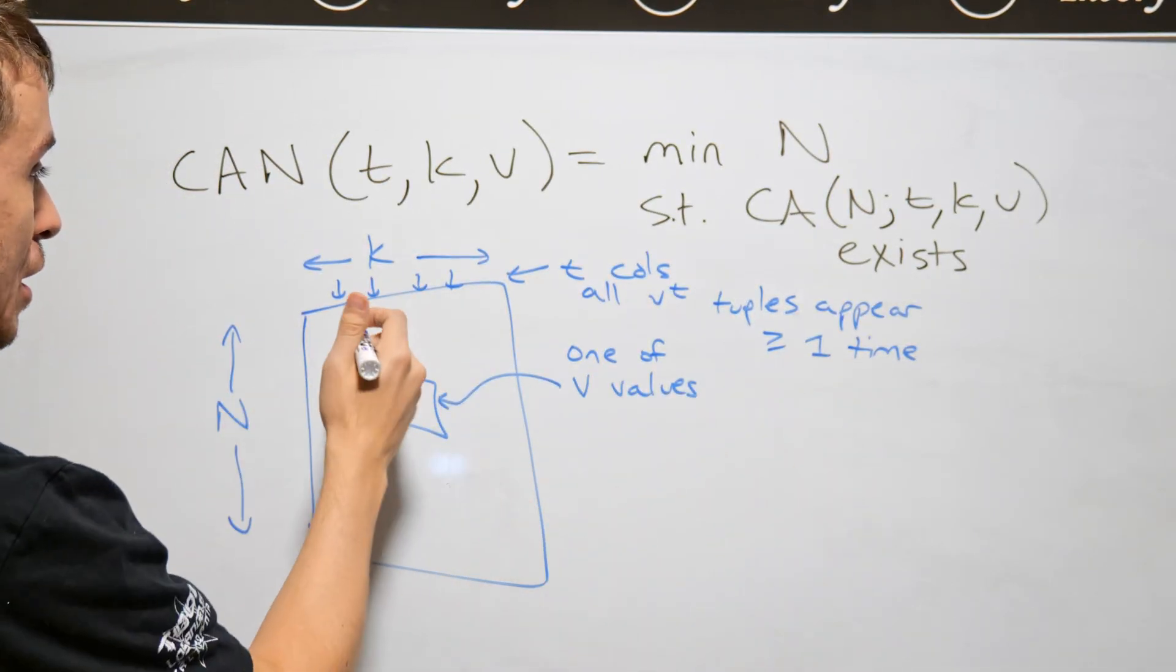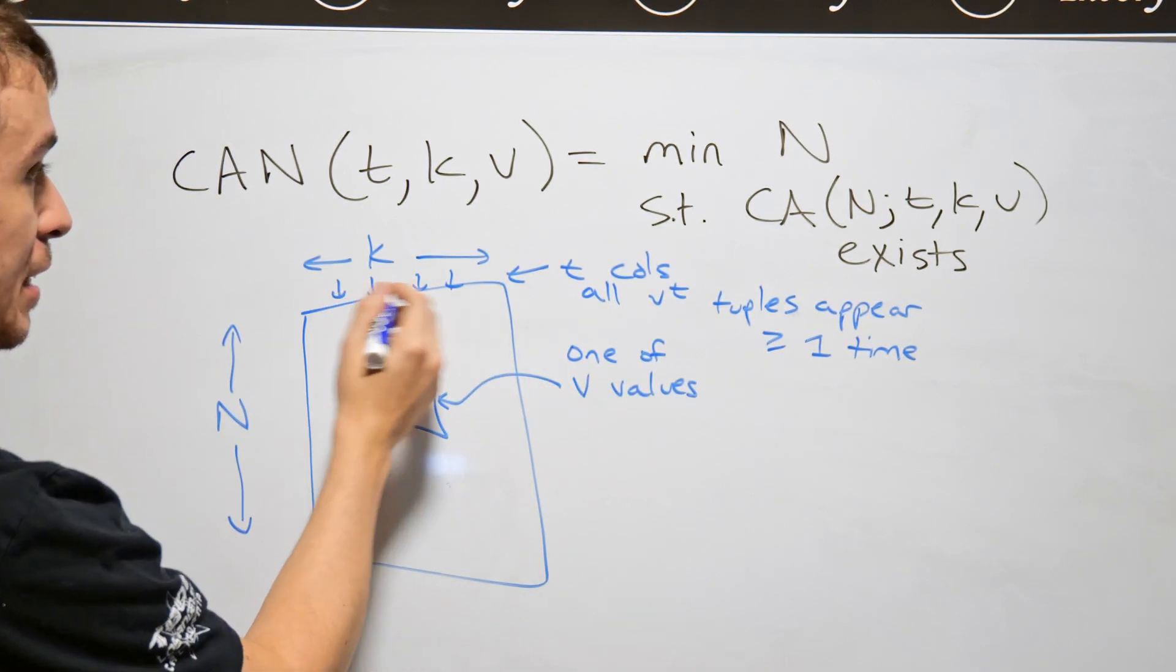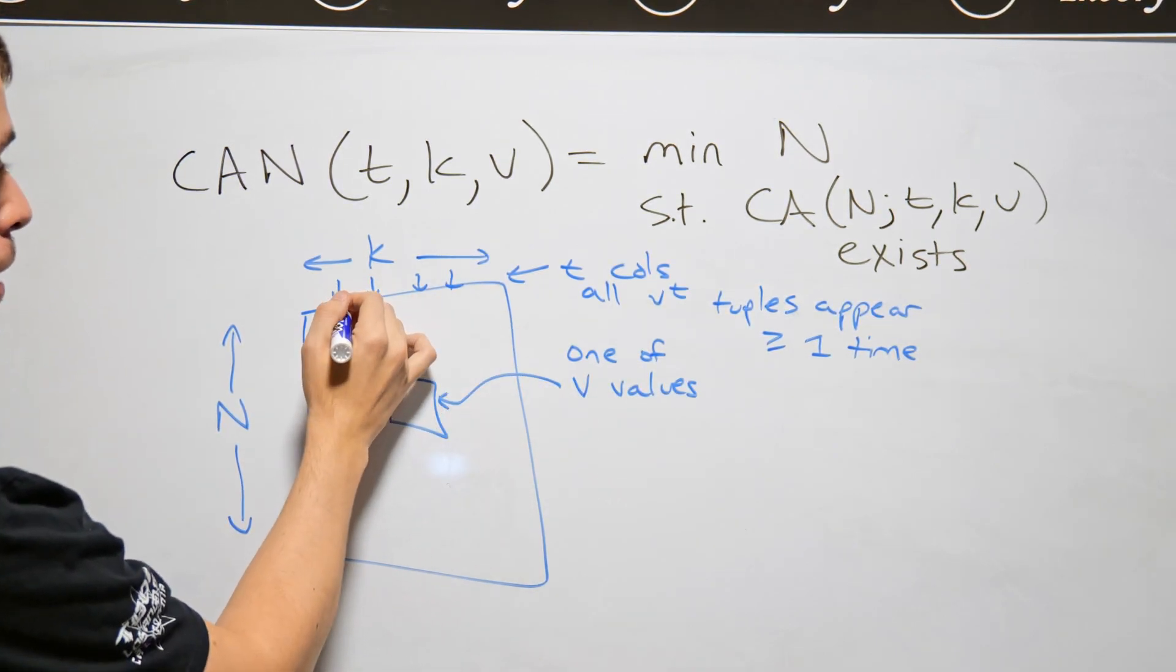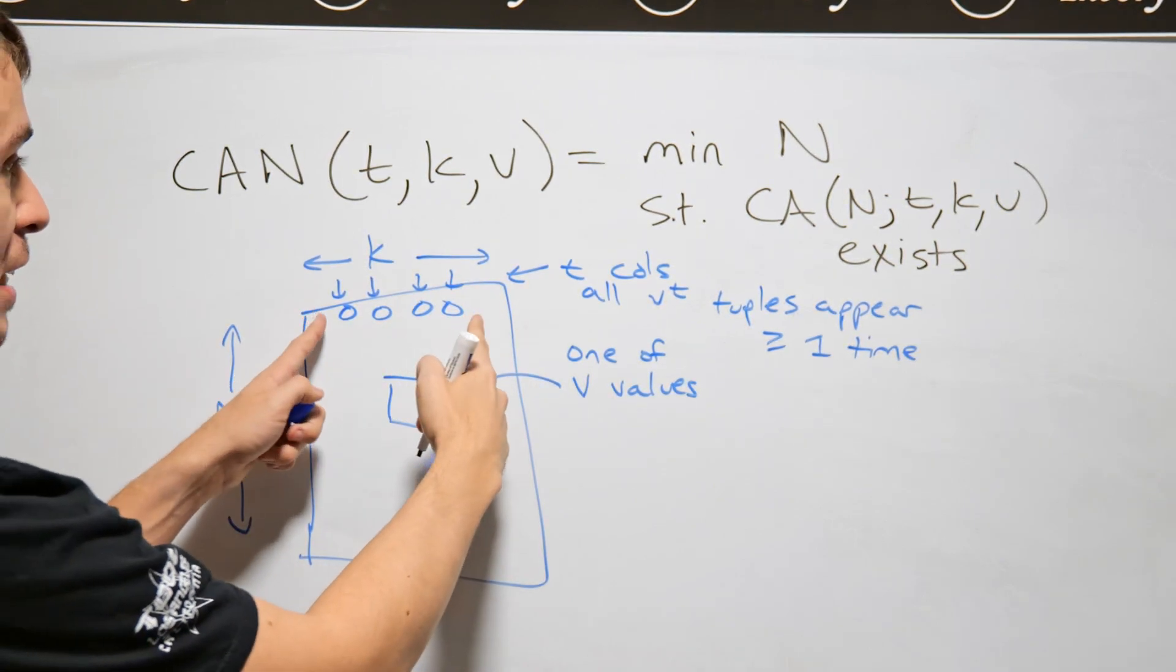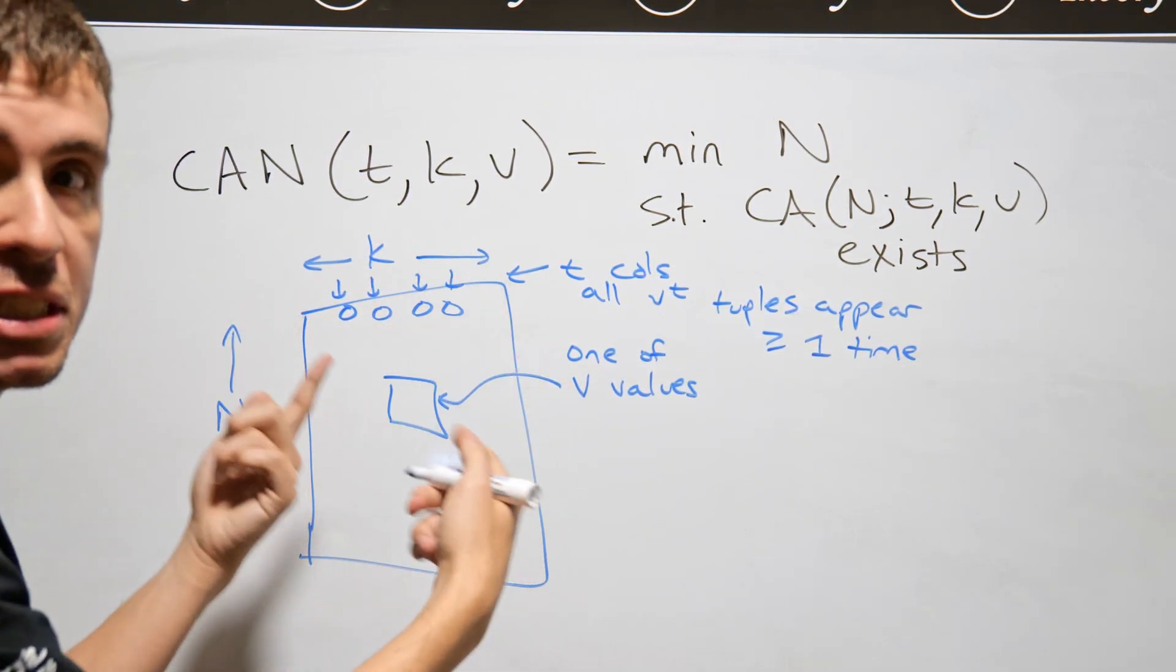So if we had, for example, v equal to 2 and t equal to 4 like I have right here, then I need to see 0, 0, 0, 0 somewhere. It doesn't necessarily have to be in this first row, but I need to see it at least once.